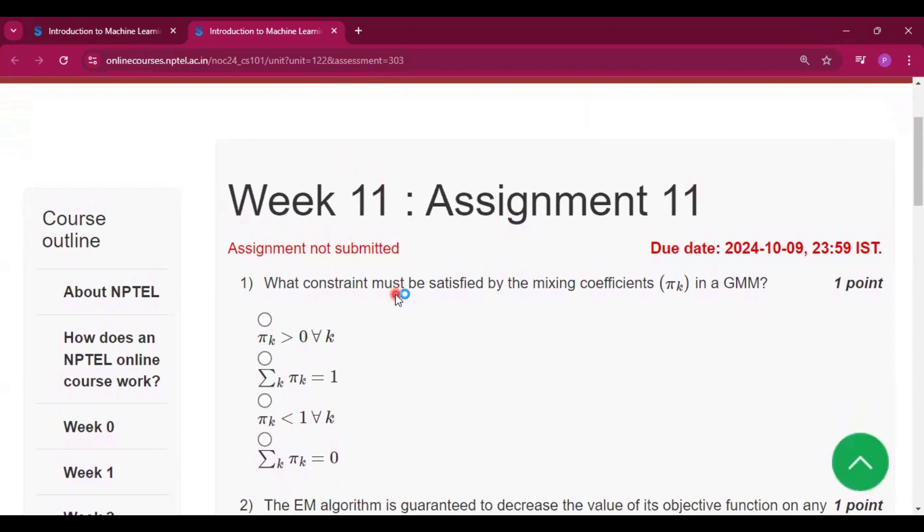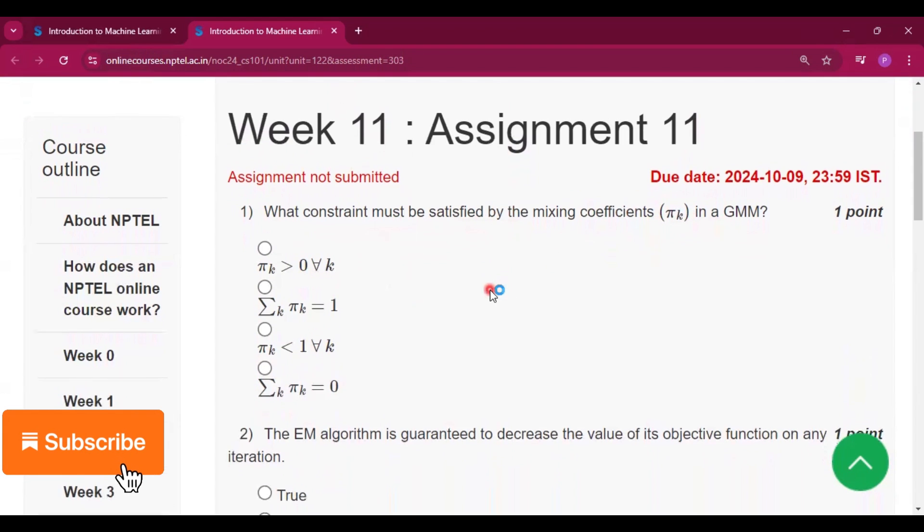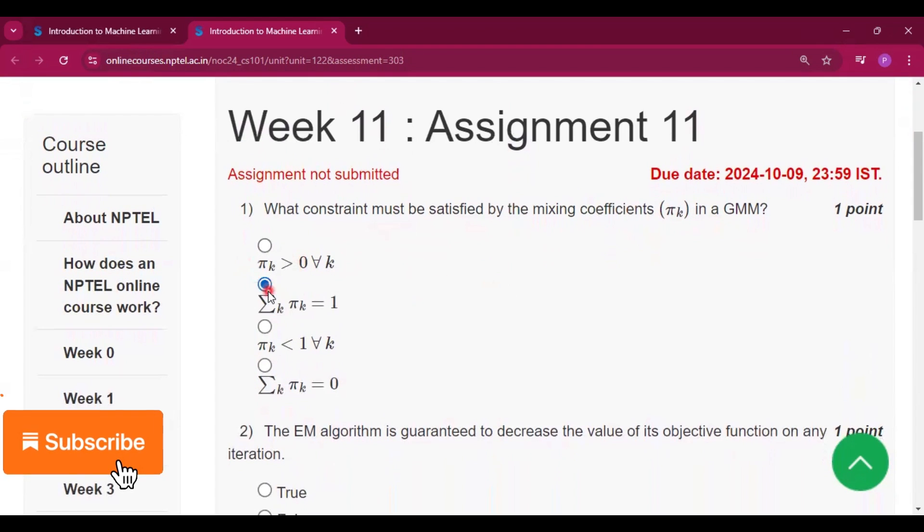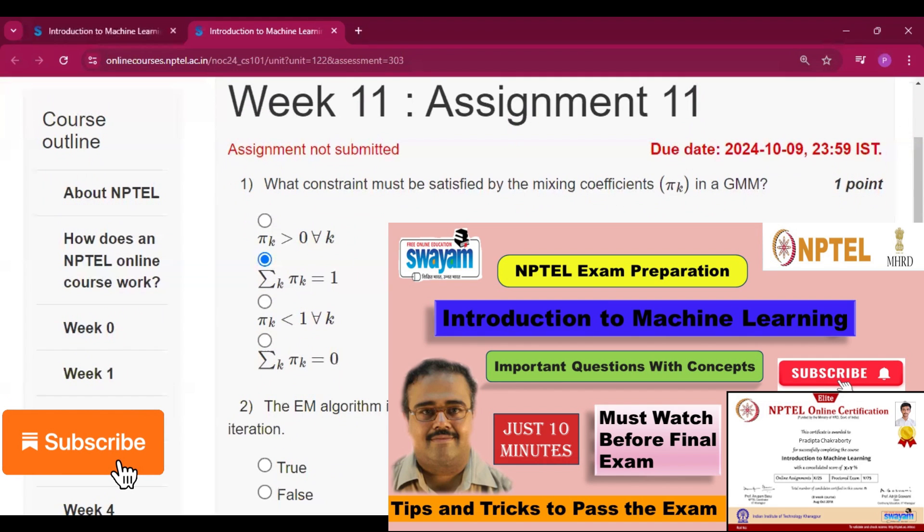Okay, now the first question is on your screen. What constraint must be satisfied by the mixing coefficients in a GMM? So the answer will be option B. I uploaded a video on how you will prepare for this course, so please go and watch.